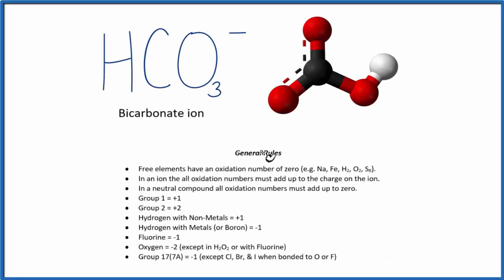In this video, we'll find the oxidation numbers for each atom here in HCO3-, the bicarbonate ion. The reds, those are oxygens, the blacks the carbon, and then we have a white hydrogen here.